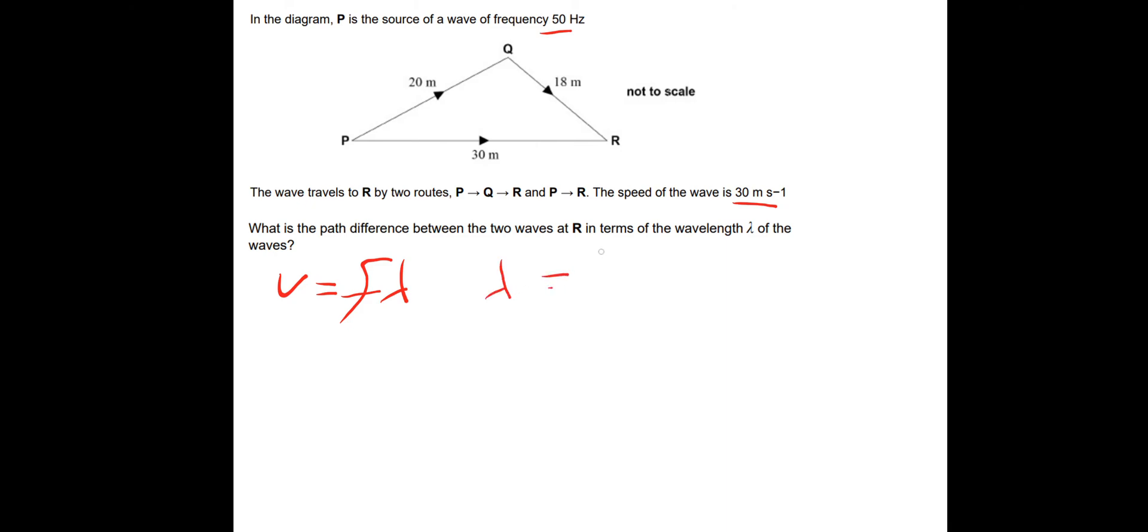So what we need to do now is look at the total distances and figure out how many of these wavelengths go into each distance. So PQR will be the 20 plus the 18, which is 38 metres. And we need to divide that by the 0.6 metres. So that's a total of 63 and a third wavelengths. Then let's do the next one. So PQR is a total distance of 30 metres. Let's see how many wavelengths there are there. That's a total of 50 wavelengths.